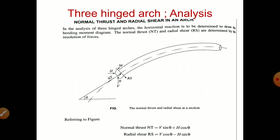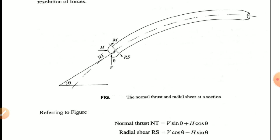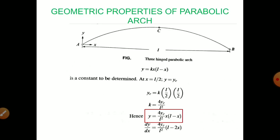In case of three-hinged arches, we come across two parameters. One is normal thrust and the other is radial shear. Normal thrust is perpendicular to the section and radial thrust is radial to the section. Normal thrust will be equal to NT, that is equal to F sin theta plus H cos theta or V sin theta plus H cos theta. And radial thrust, RS, will be equal to F cos theta minus H sin theta.